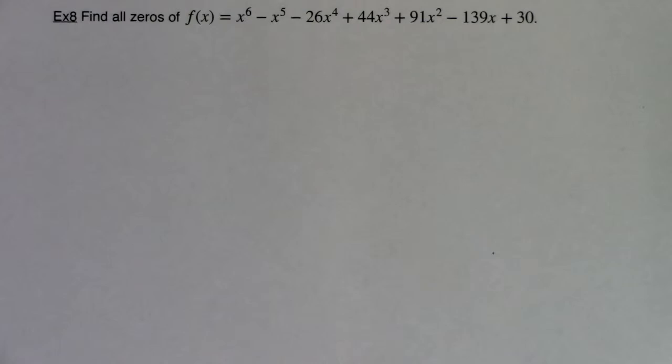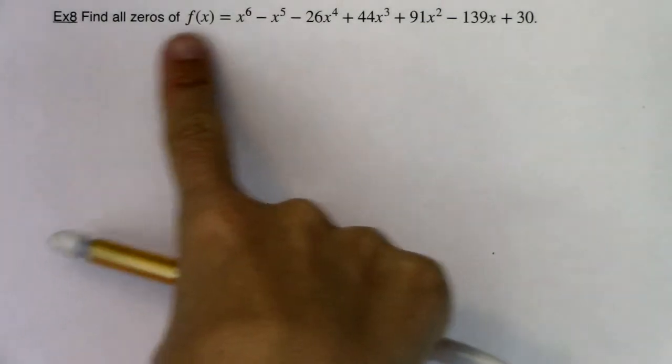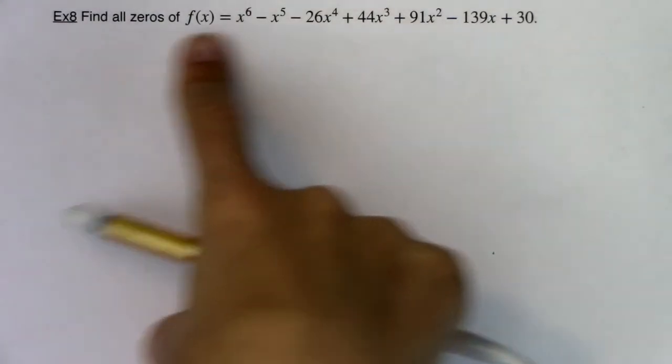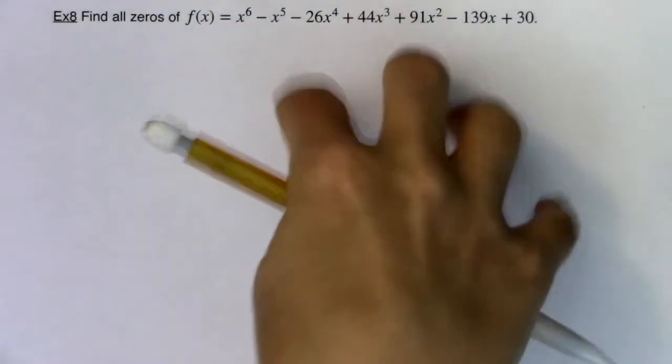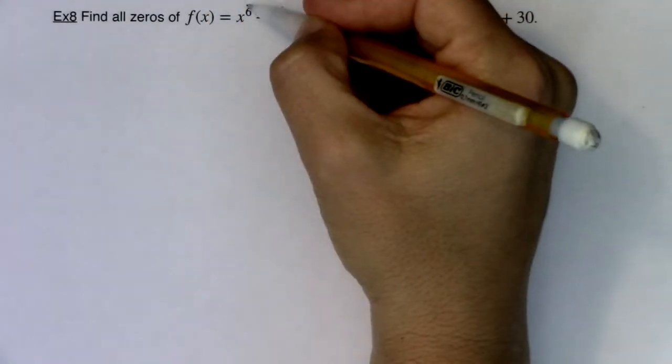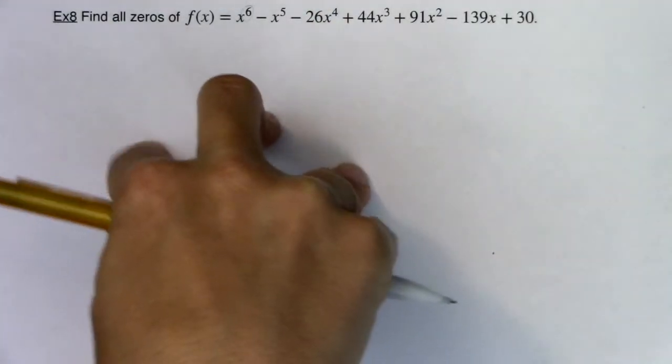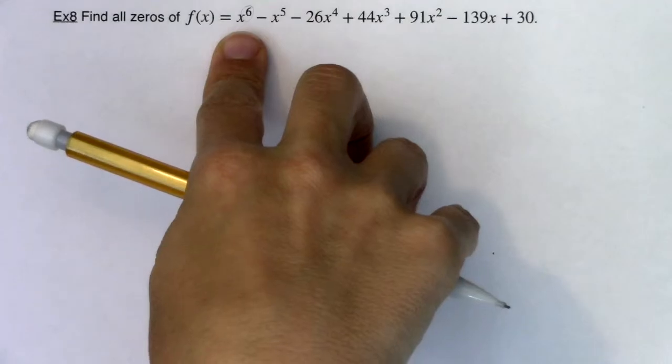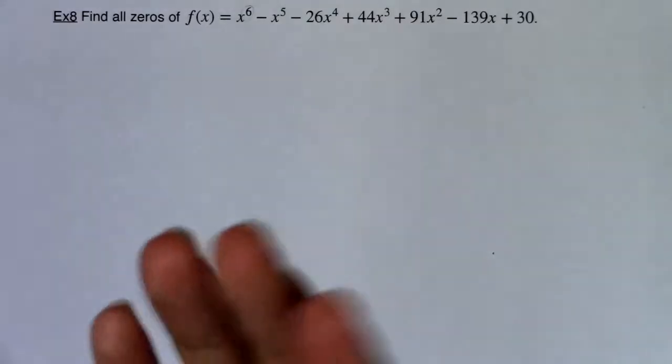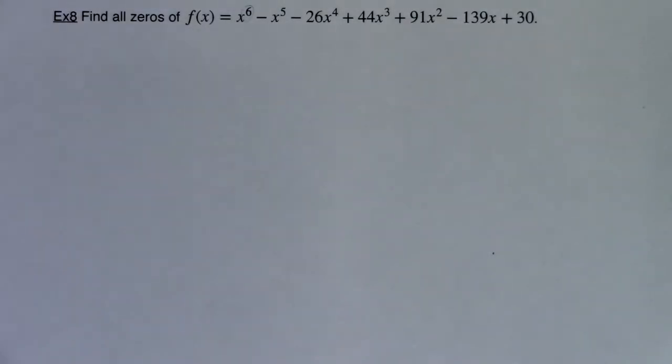Hey Math 31, last example in this section, and it is a beast. We're going to find all the zeros of this polynomial, and it is a huge polynomial. It's a six-degree polynomial, so we have potentially six zeros.